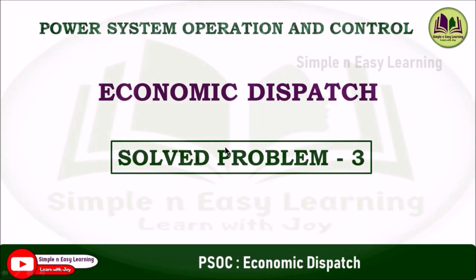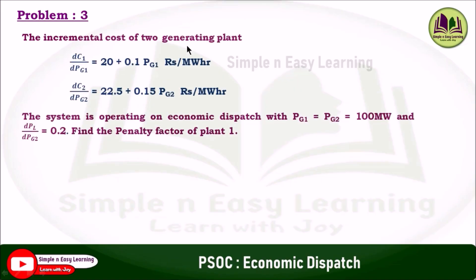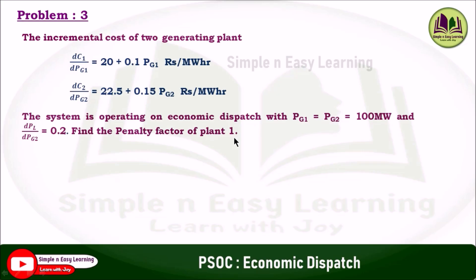Economic dispatch solved problem 3. The incremental cost of two generating plants: DC1/DPG1 = 20 + 0.1·PG1 rupees per megawatt hour, and DC2/DPG2 = 22.5 + 0.15·PG2 rupees per megawatt hour. The system is operating on economic dispatch with PG1 = PG2 = 100 MW, and the incremental transmission loss for plant 2 is DPL/DPG2 = 0.2. Find the penalty factor of plant 1.